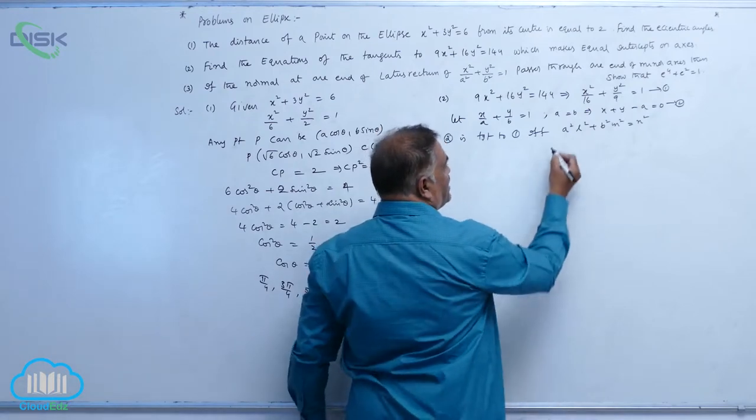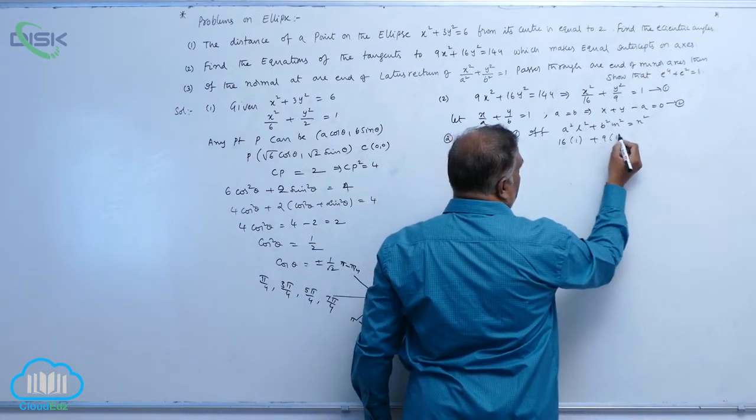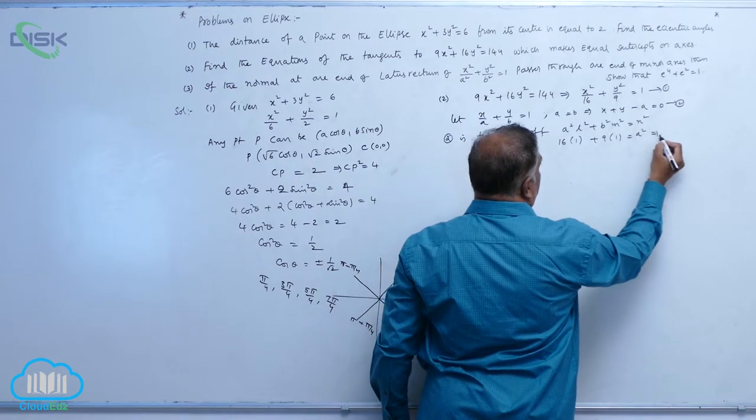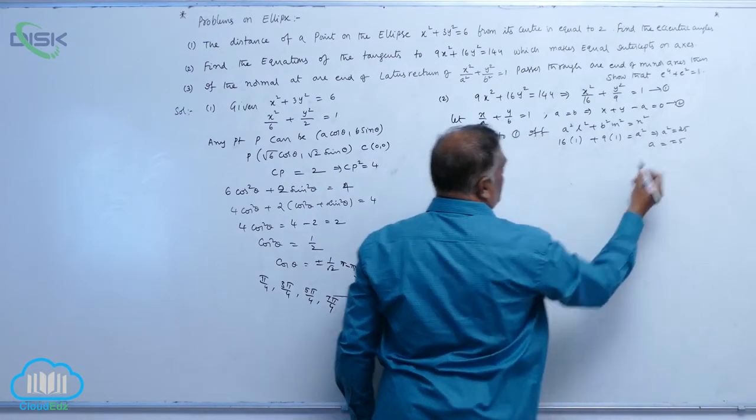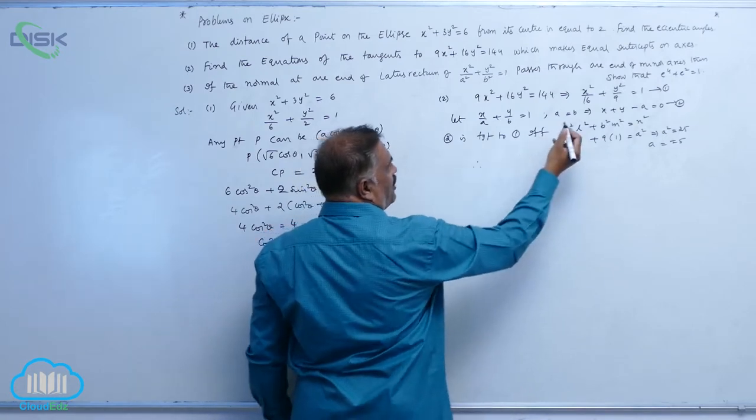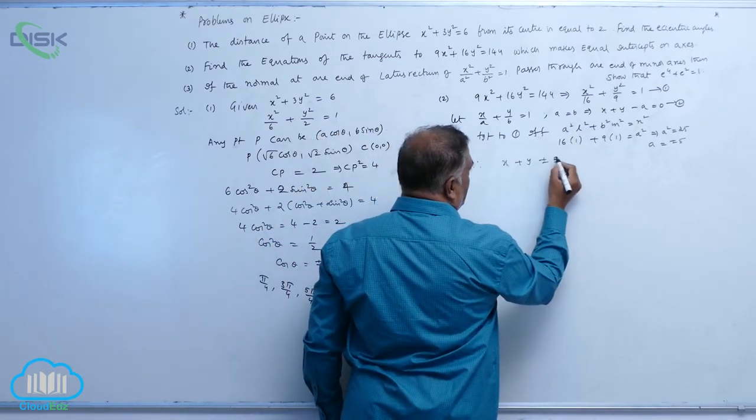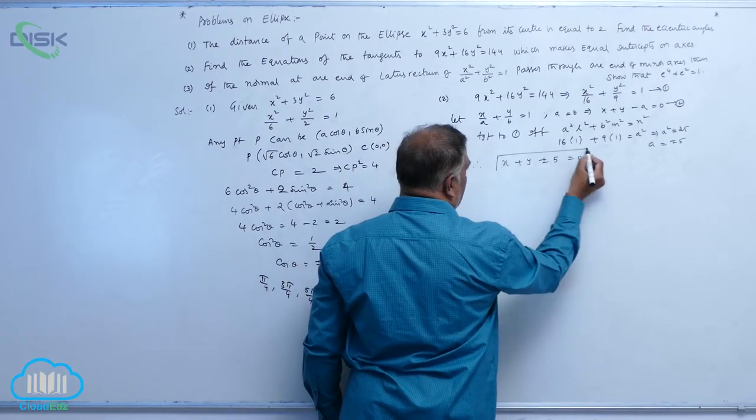A square is 16 into 1, 9 into 1 is equal to a square. So a square is 25, a equal to plus or minus 5. Therefore, the equation is x plus y plus or minus 5 is equal to 0.